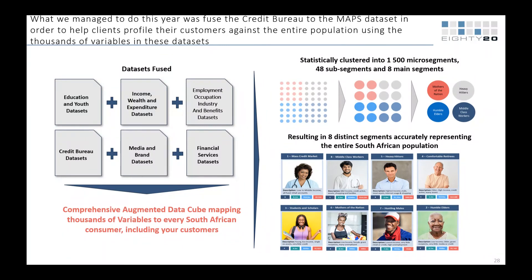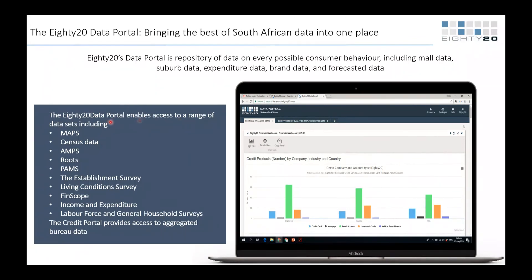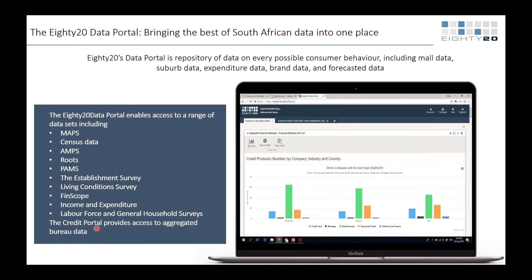I didn't want to spend too much time on this because it's shameless self-promotion, but there's a reason I want to show it — I do think it's a really interesting tool. We used to have to go to Labor Force for occupations, Roots for mall behavior, and AMPS or MAPS for media behavior — three separate data sets. We've always thought about threading all these datasets together, and with COVID we lost a big client which freed up our data scientists to finally crack this problem after 10 years of thinking about it.